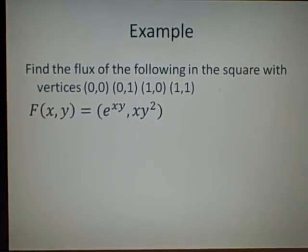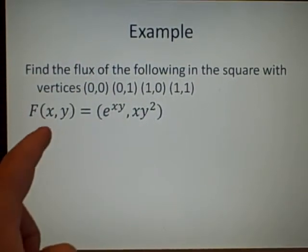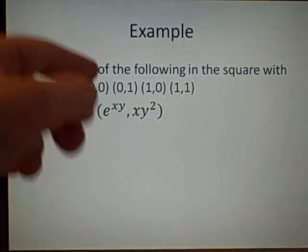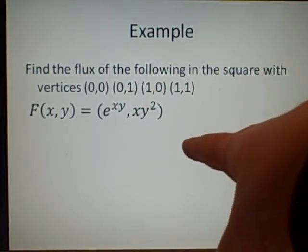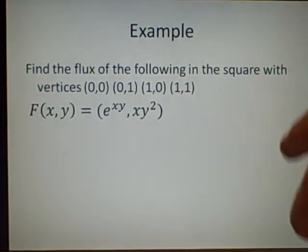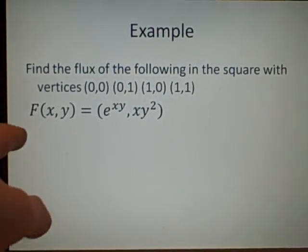We've got a quick example. I won't be working out the double integral, because it's very simple. We find the flux of the following square with vertices (0,0) (0,1) (1,0) (1,1). They're the vertices, so it's a little square, one by one. And this is our function.